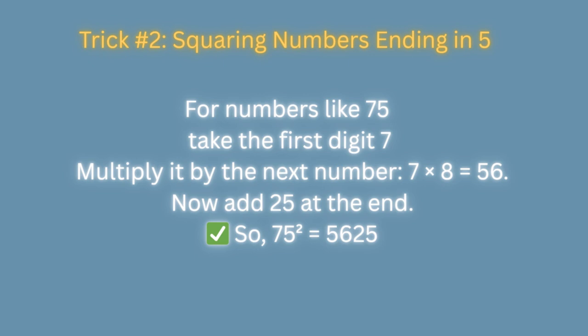Trick number 2: Squaring numbers which end in 5. For numbers like 75, take the first digit, 7. Multiply it by the next number, that is 7 times 8 which is equal to 56. Now add 25 at the end. So, 75 squared is equal to 5625.